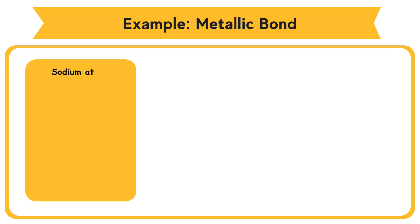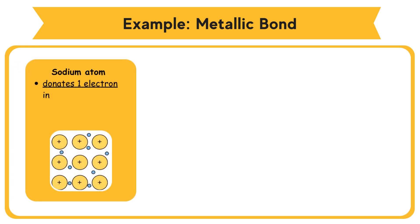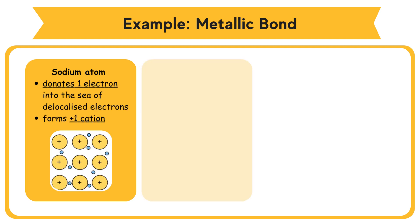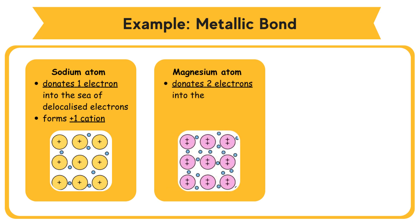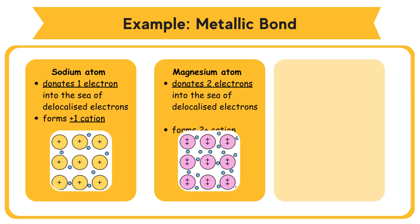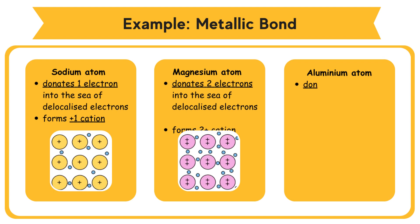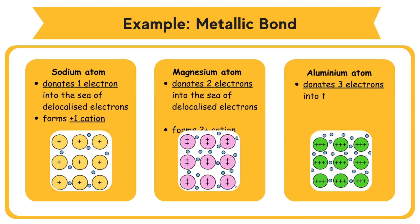Sodium atom donates one electron and forms one positive cation (Na+). Magnesium atom donates two electrons into the sea of delocalized electrons and forms two positive cations (Mg2+). Aluminium atom donates three electrons into the sea of delocalized electrons and forms three positive cations (Al3+).